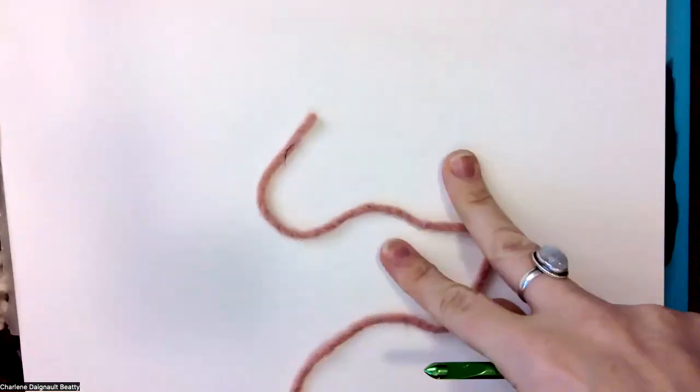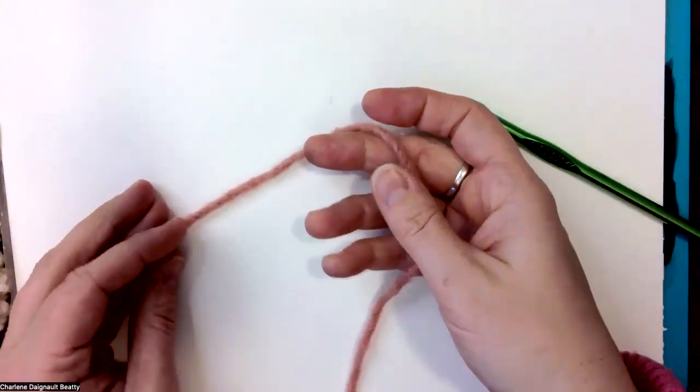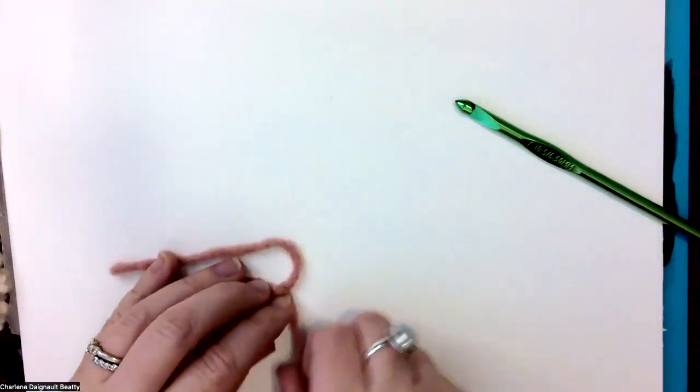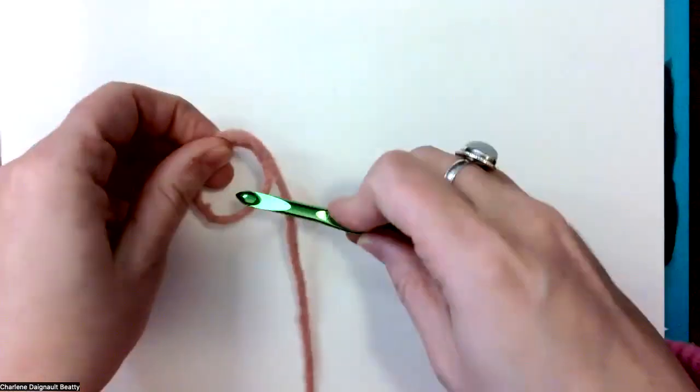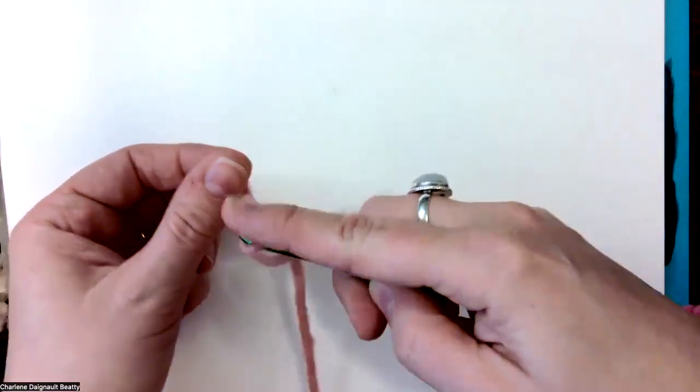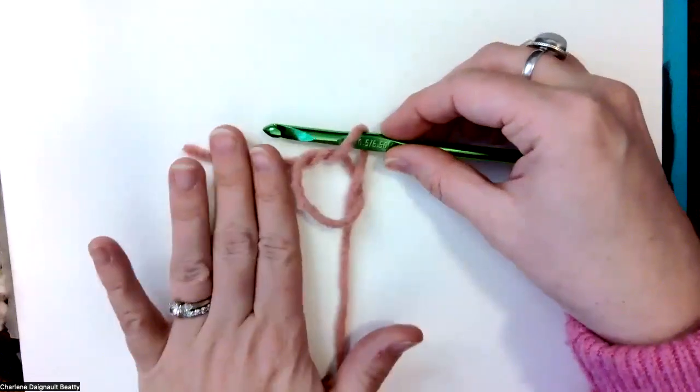So magic ring, we are going to first have a loop, okay, a loop. Then what you're going to do is you're going to go into this loop and you're going to grab the yarn, so you kind of have this kind of vibe here.